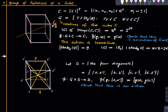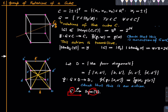Since we have an action of G on D, we get a group homomorphism ψ: G → Sym(D) ≅ S4. If we can show this is surjective, then since both groups have size 24 it will be bijective, hence an isomorphism. To show surjectivity, we will show that every transposition in S4 lies in the image of ψ, and since transpositions generate the entire symmetric group, this will complete the proof.